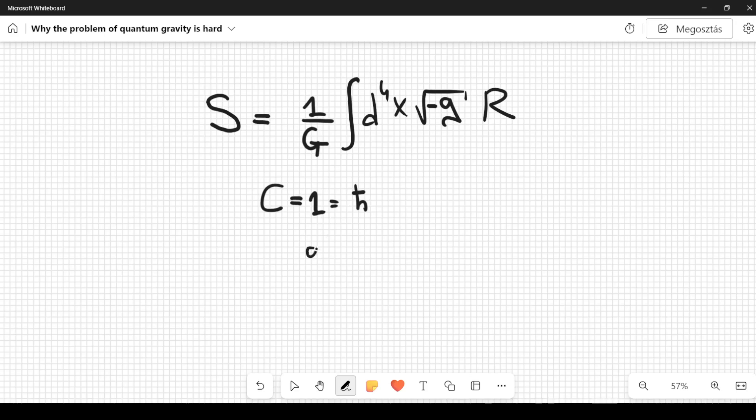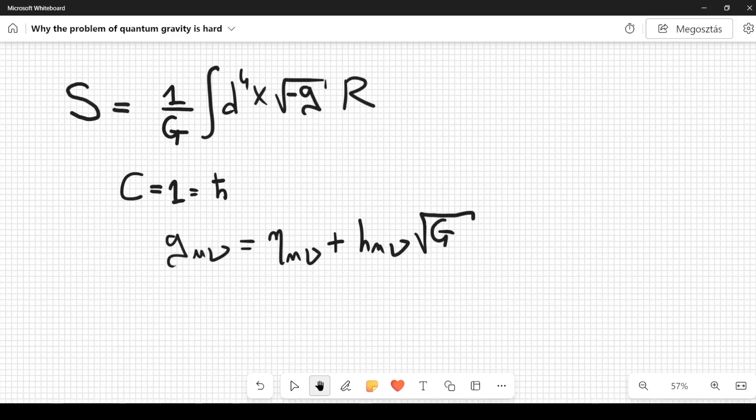Now, when we expand the metric tensor g_μν in terms of the Minkowski η_μν, which is the Lorentz metric tensor, so this is the metric tensor when space is flat, plus, and then here I'm going to consider a term of the kind h_μν, which is to be considered a perturbation of the Minkowski metric, and then here let's multiply this by the square root of G, which is the gravitational constant here. By expanding the action in terms of this perturbation h, which at first is considered to be small, one can rewrite the action itself in terms of the perturbation, and in particular in terms of products of derivatives of h.